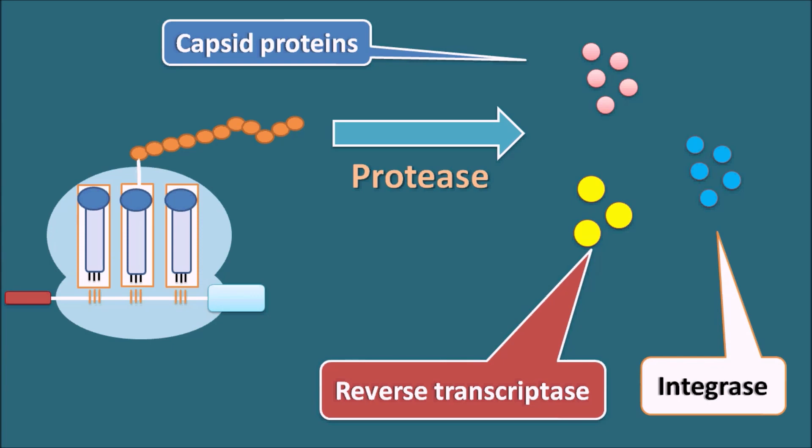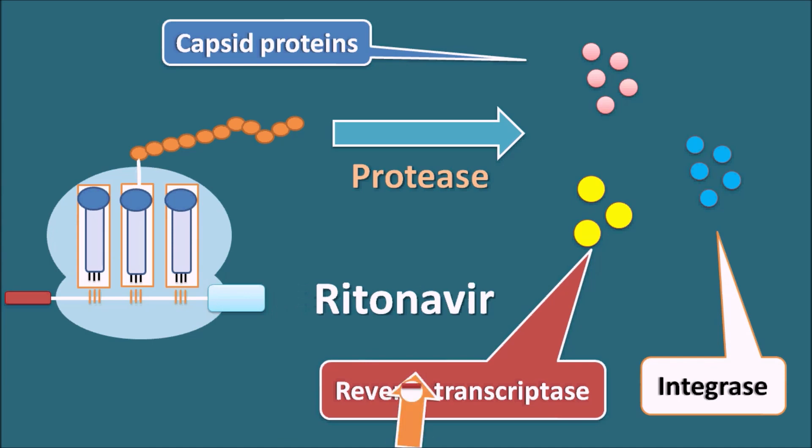Now this HIV protease enzyme is blocked by protease inhibitors, including Ritonavir. So all the protease inhibitors are going to inhibit the synthesis of structural as well as functional proteins of the viral cell.